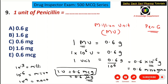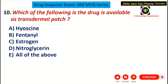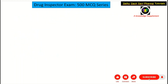The correct answer is E choice: 0.6 mcg, that is microgram. Coming to the last question of the day: which of the following drug is available as a transdermal patch? Transdermal patches are drugs loaded into a patch and attached onto the skin, from which the drug diffuses into the circulation.